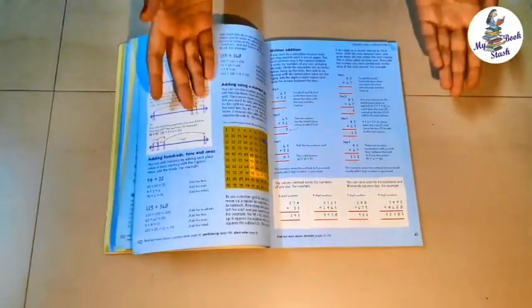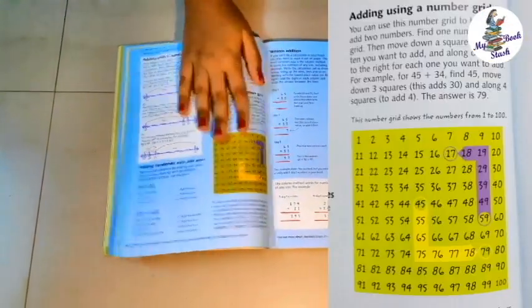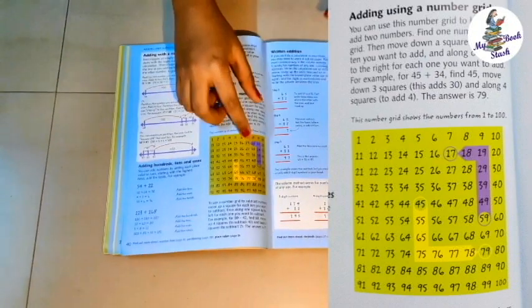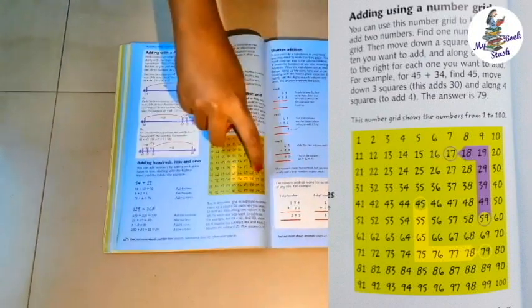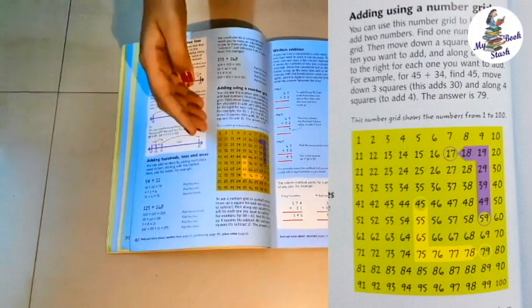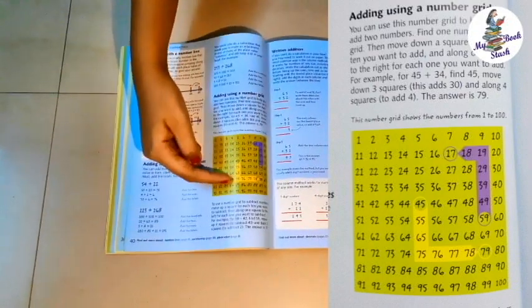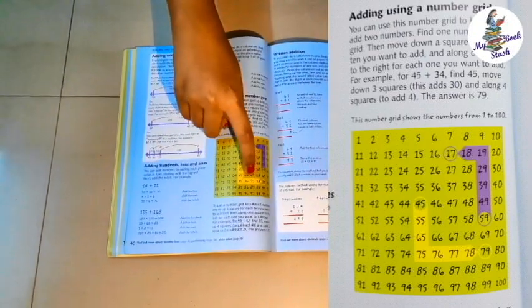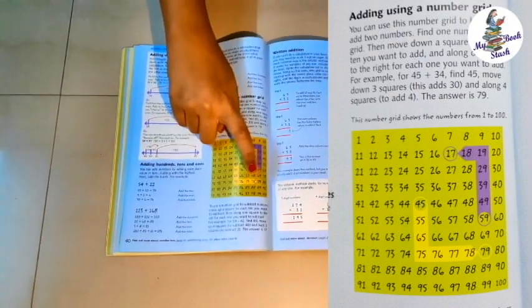Let me give you one more example which can help us do addition and subtraction mentally like adults do. Let's see how to add using number grid. For example, if you want to do 45 plus 34, find 45, move down 3 squares. This adds 30 and move along 4 squares to add 4. The answer is 79.